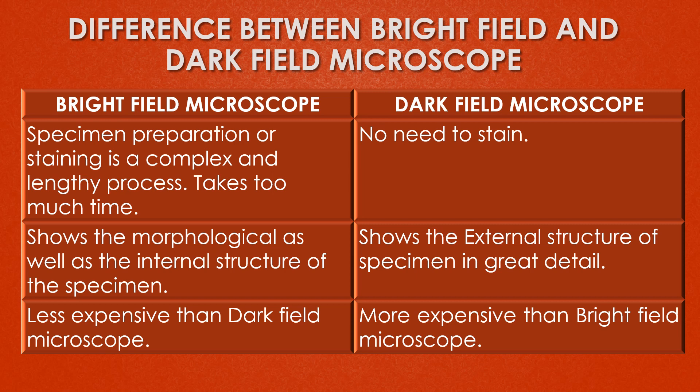Specimen preparation or staining is a complex and lengthy process for the bright field microscope and takes too much time, but for the dark field microscope there is no need to stain the specimen. The bright field microscope shows the morphological as well as the internal structure of the specimens, whereas the dark field microscope shows the external structure of the specimen in great detail. The bright field microscope is less expensive when compared to the dark field microscope.